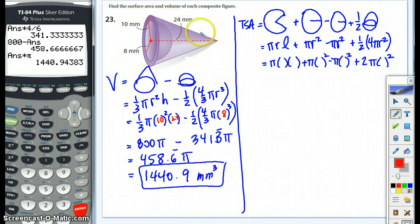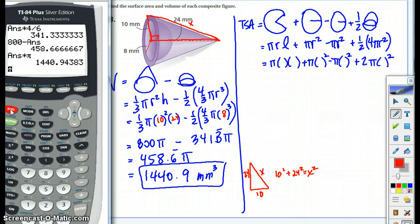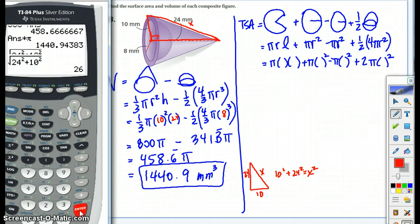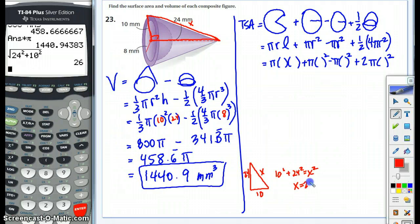We need this slant height right here. And that's a right triangle. So off to the side, let's call this slant height x. So we have a triangle here. That's 10 and that's 24x. So 10 squared plus 24 squared equals x squared. And let's go use our calculator. Square root of 24 squared plus 10 squared equals 26. Oh, they gave us a very pretty number. Thank you for that.